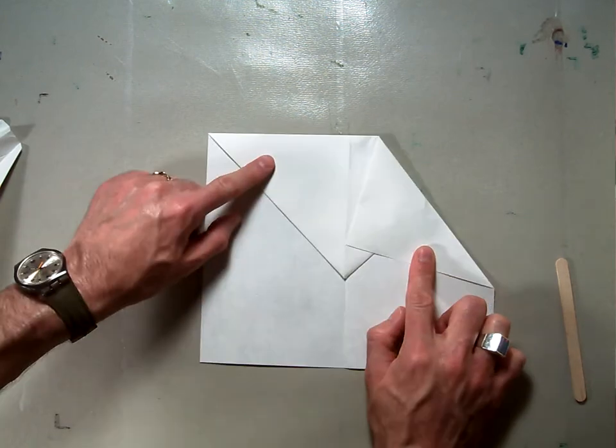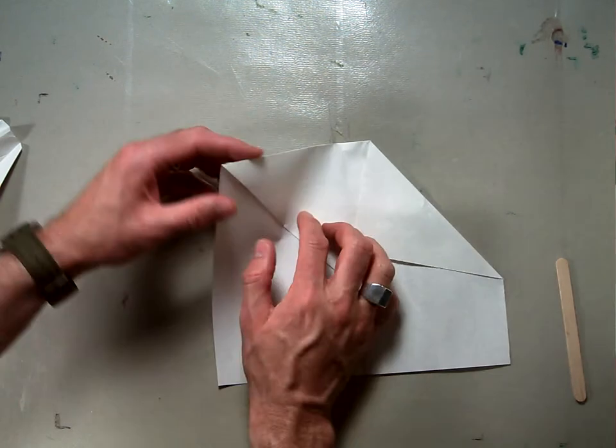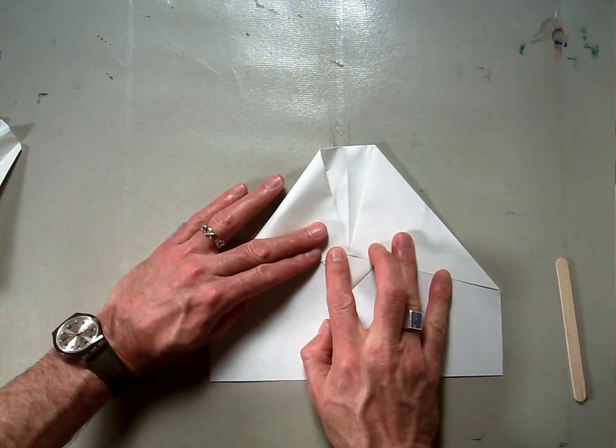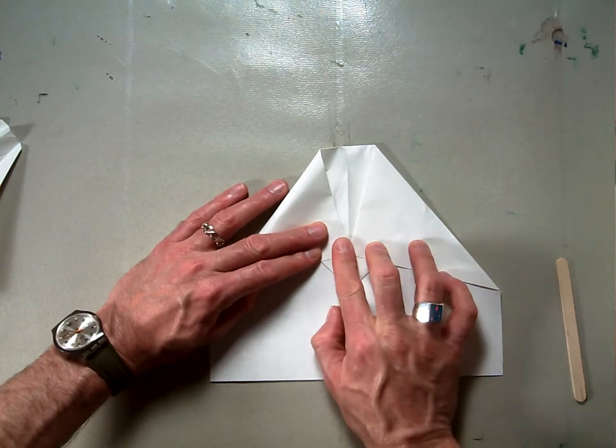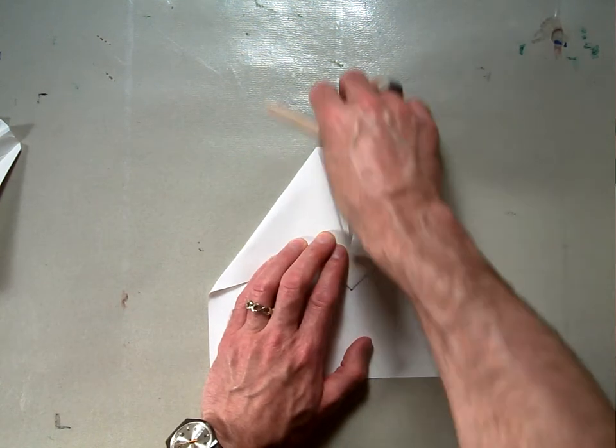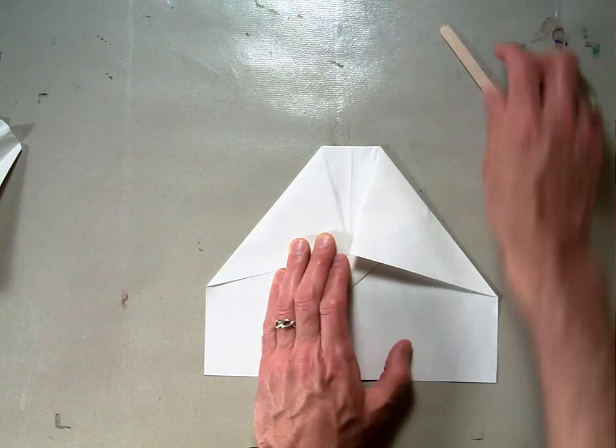And then I'm going to do the same fold on this side. Make it as symmetrical as you can so it looks nice. And just have those two corners touching right there along that center line. Use your bone folder so it's a nice strong crease.